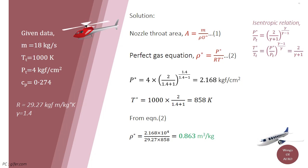Now, solving equation number 2, we get the density is 0.863 m³ per kg.